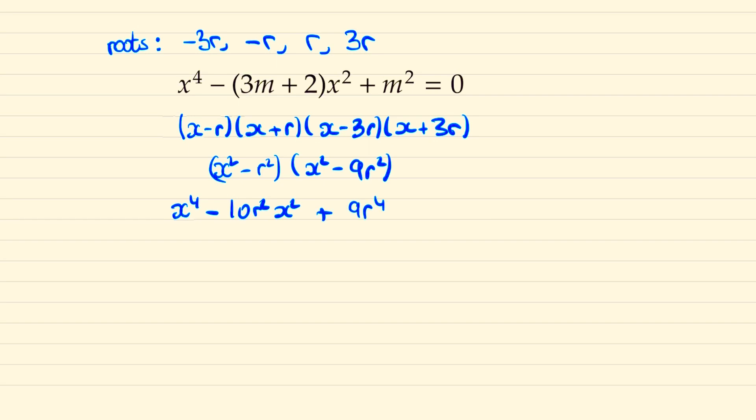And so we can compare coefficients. So we can realize that 9r to the 4 must equal m squared and 10r squared must equal 3m plus 2. And so we can form these two simultaneous equations.